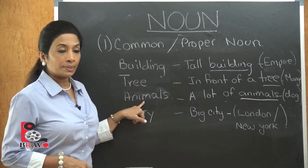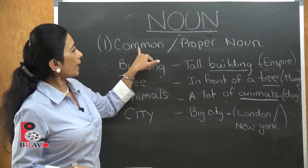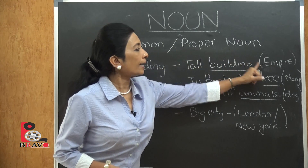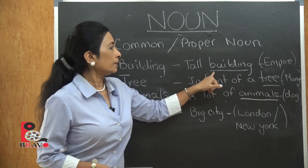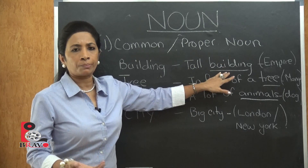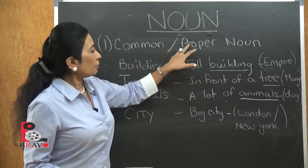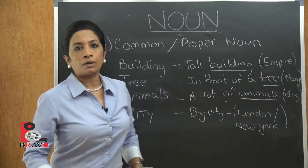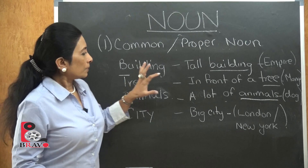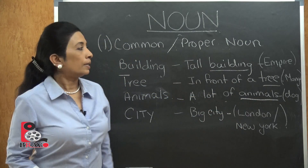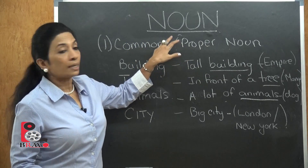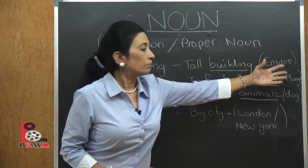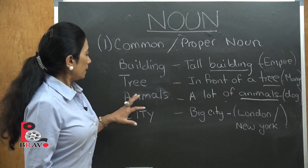Common noun examples include buildings, trees, animals, and cities. When you address a building as a common noun, you say 'tall building.' But with a proper noun, you add a specific name, such as 'Empire State Building.' As a common noun it's just 'tall building' or 'big building,' but for proper noun you address it by name. Similarly, a tree is a common noun, but 'mango tree' or 'apple tree' would be a proper noun.